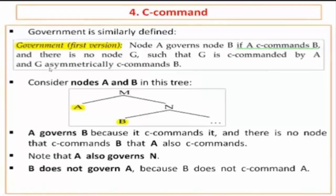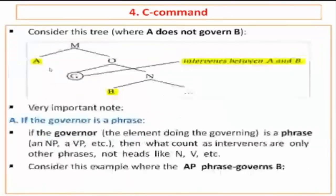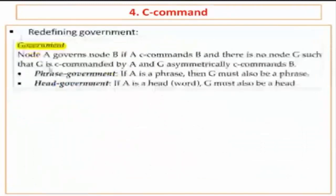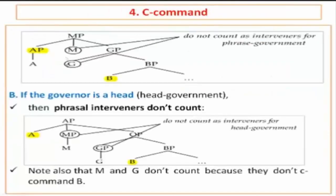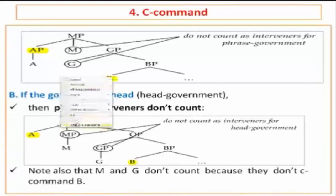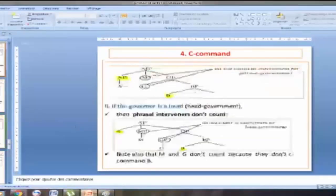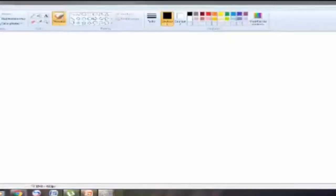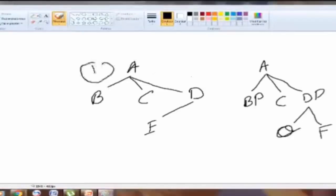This is the main point that you forgot. Now I'm going to come up with an example where there is no government, because there is no asymmetric c-command. Suppose that we have here A — here we have example one and example two.